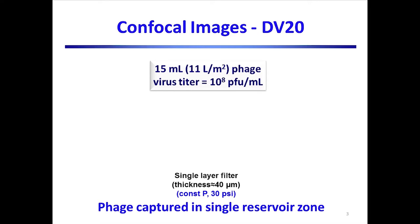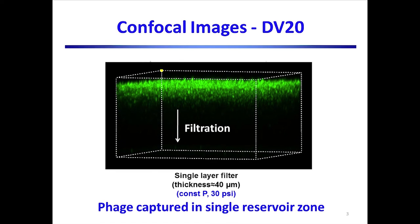In this work, we applied fluorescence confocal microscopy to directly visualize virus capture through the depth of the virus filter. Experiments were performed with a model bacteriophage, a bacterial virus covalently labeled with a fluorescent dye such as fluorescein. A suspension of labeled bacteriophage was used to challenge the virus filter at a set transmembrane pressure. At the completion of the experiment, a small piece of the membrane was placed under the confocal microscope.